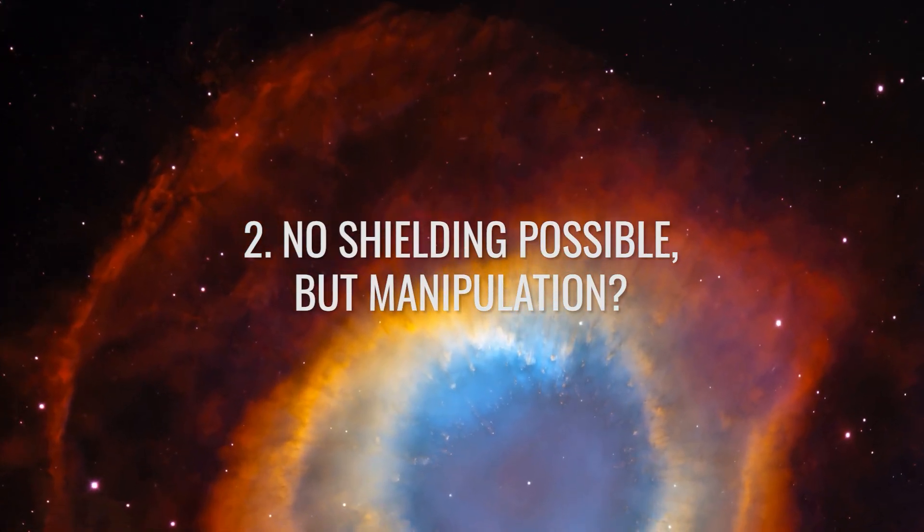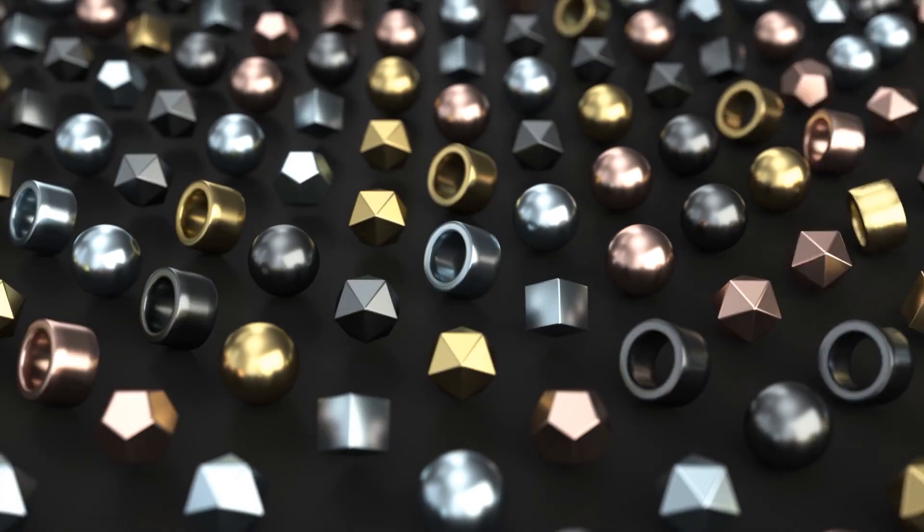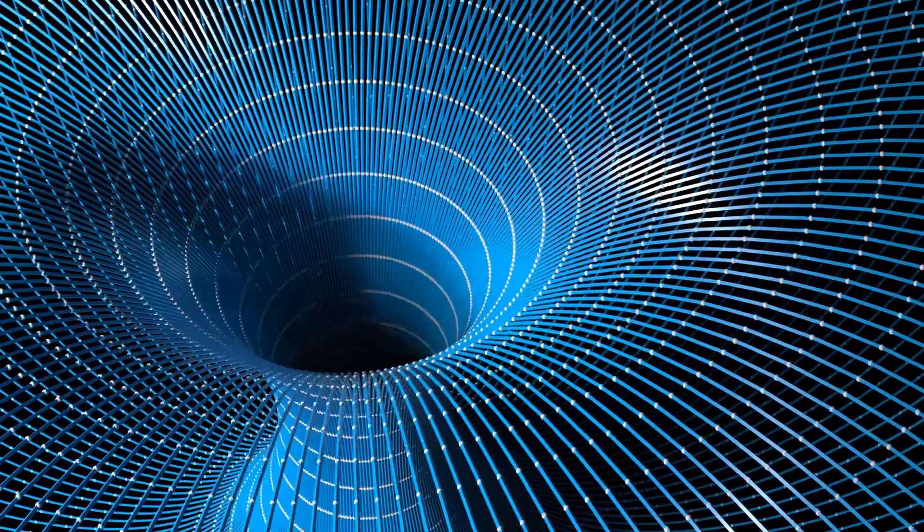No shielding possible, but manipulation? Measurements have shown that there is no known way to shield gravity. For all known electric and magnetic fields, materials have been found that can block or at least deflect the forces. This has not yet been possible with gravity.